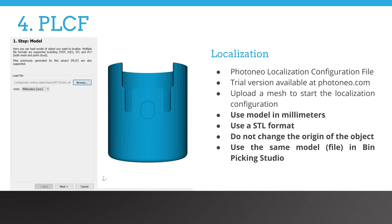One of the main ideas behind Bin Picking Studio is to transform programming, changing parameters in configuration files and algebra operations, into working with the visual representation of CAD models. This significantly decreases the required technical expertise of the user and brings this type of application into the hands of robotics programmers with at least a basic experience in robotics. One of the very first CAD models users will need is the model of the part.